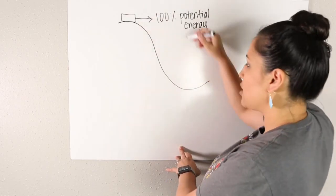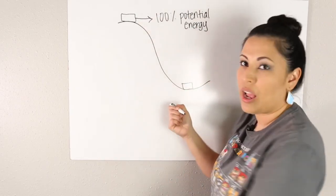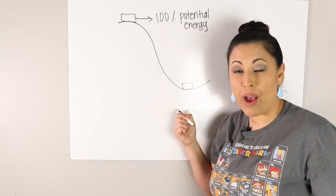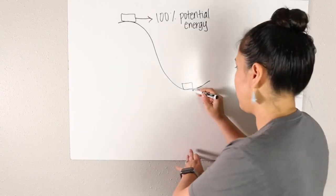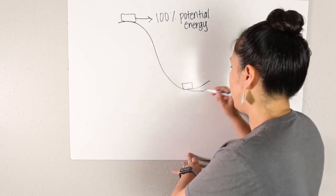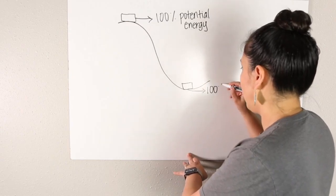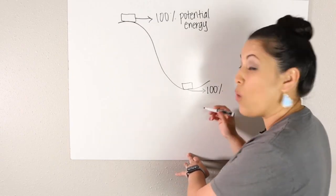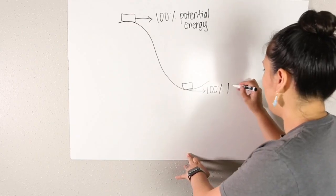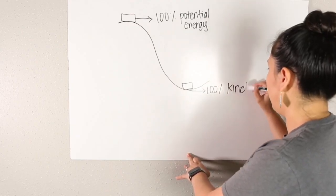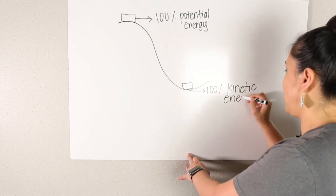So I'm going to say we have 100% potential energy. Now, as our car goes to the bottom, what type of energy do we have at the bottom? This would be 100% kinetic energy.